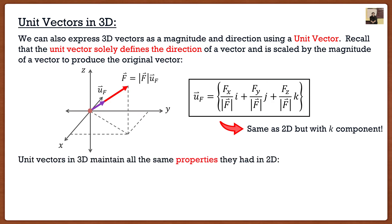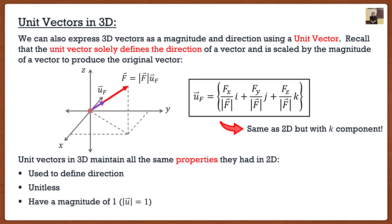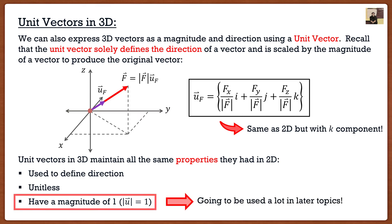Unit vectors in 3D maintain all the same properties as in 2D. Remember three things: first, they're used solely to define direction — that's it. Second, they're unitless. Third — and very important — they have a magnitude of one. If you're told it's a unit vector, its magnitude is one, and this will become very important not only now but in later topics as well.